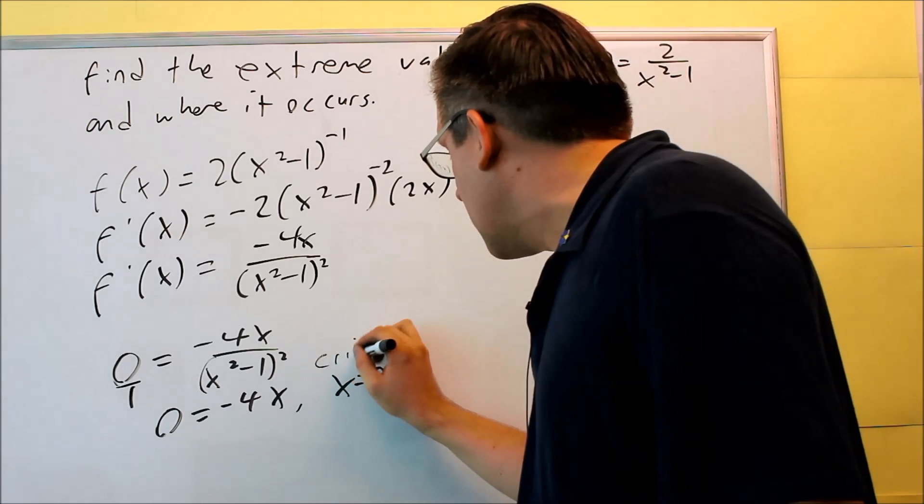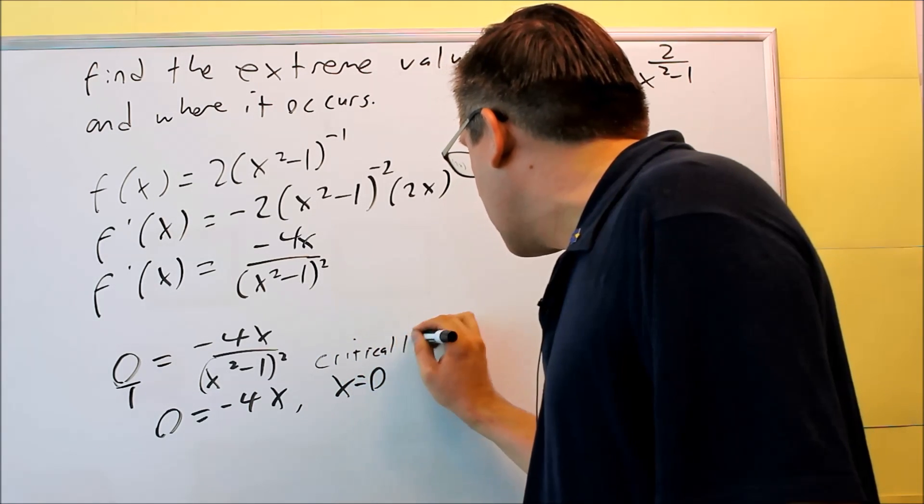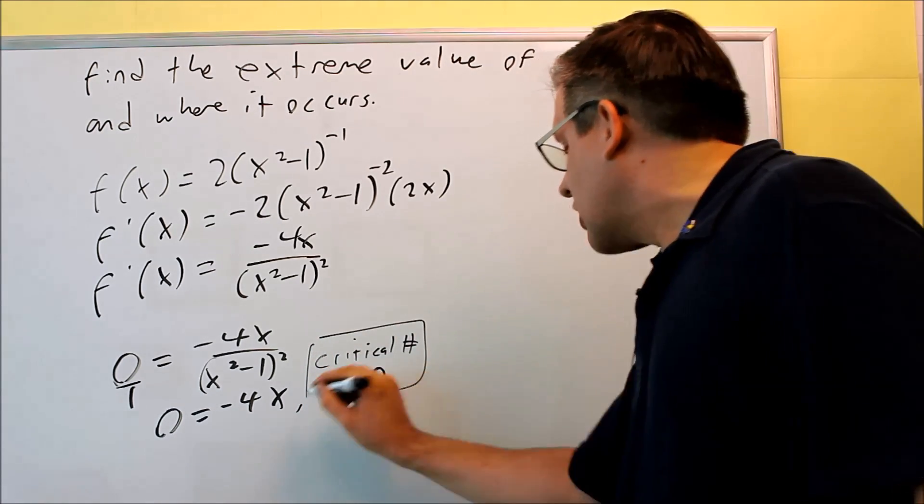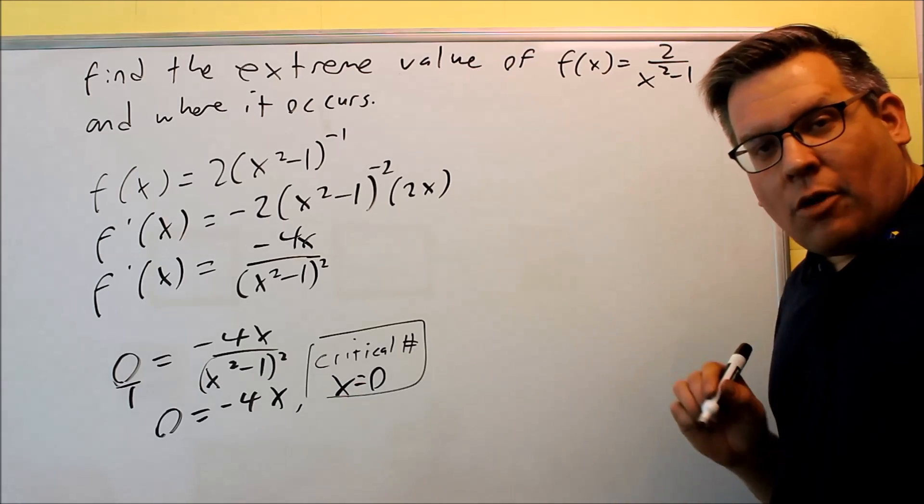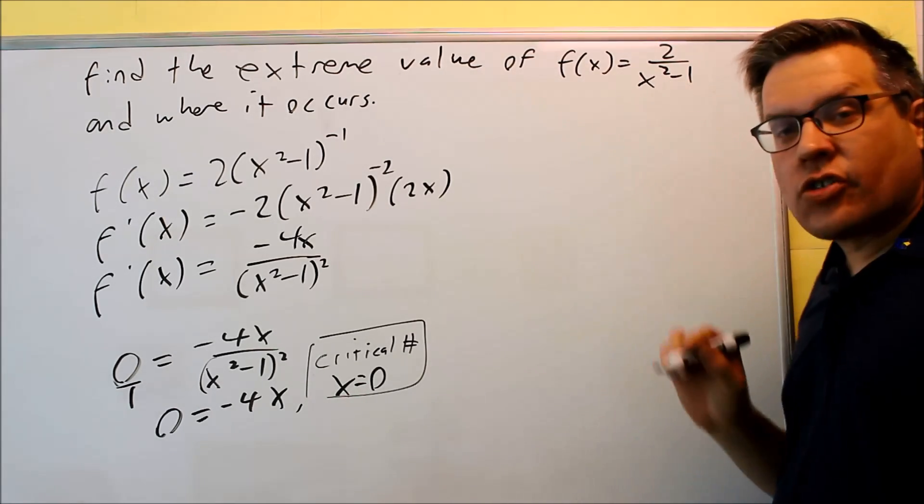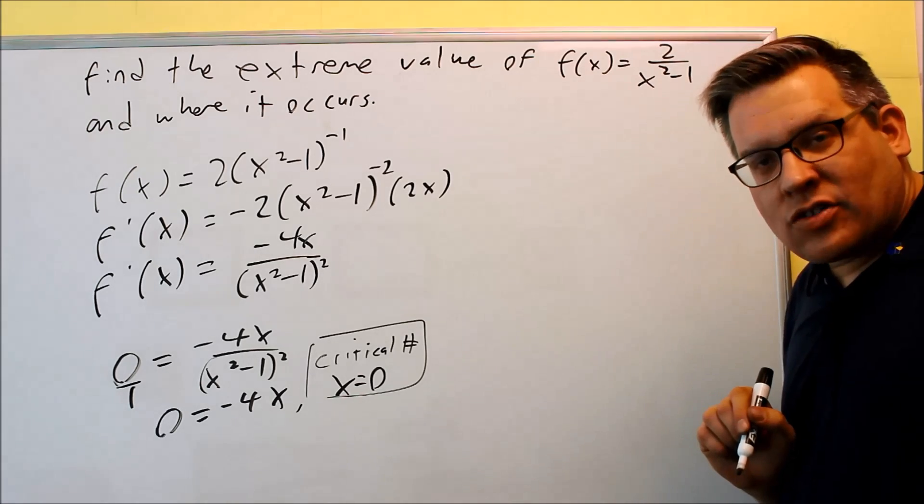So this right here, this would be the critical number. In fact, that's the only critical number that we have, is x is equal to 0. Now, I know that 1 and negative 1, these are actually going to be vertical asymptotes.